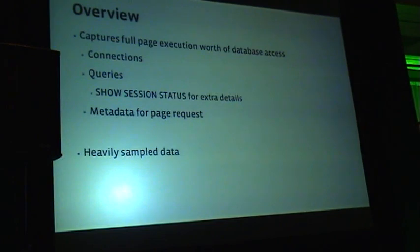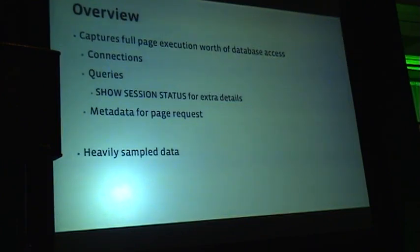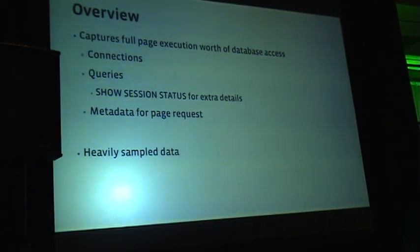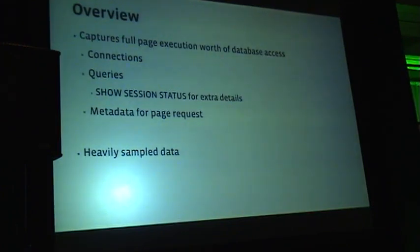For database queries, one of the other things we capture is all the show session status variables. We do that command before and after every query, subtract the numbers, and we can see exactly what that query was doing. We get things like how many handler accesses it had, if it had to do sorting, how many rows were examined versus returned — so we can find things like index usage. For example, it had to read a thousand rows but only returned three, which shows it wasn't working very well. It also records metadata for the page request: what page it was, how long it took, if it was API versus not.